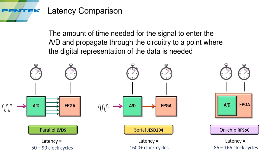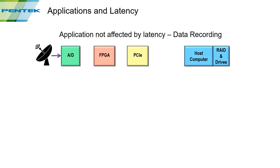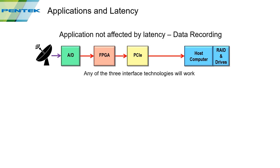If low latency is a requirement, serial really isn't the solution. An application that doesn't care much about latency is data recording — where an antenna receives a signal, the ADC converts it, the FPGA encodes metadata, and it's passed to a recorder. In this case, a delay of seconds or more doesn't matter as long as no data is lost, so any of the three technologies will work.